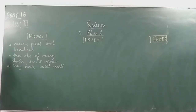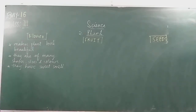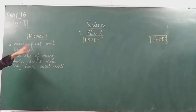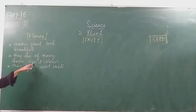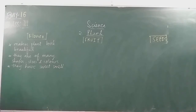So the three points about a flower: flower is a part of a plant that grows on a shoot above the ground; it makes the plant look beautiful; they are of many shapes, sizes, and colors; and they have a sweet smell. Now, what is the function of a flower?